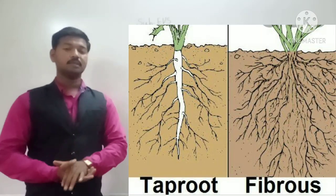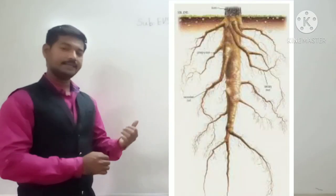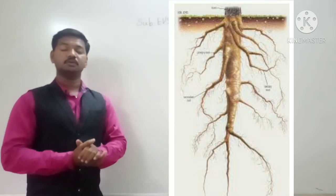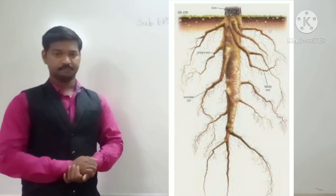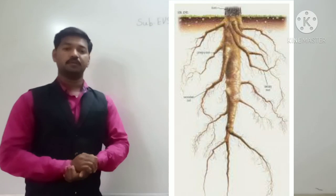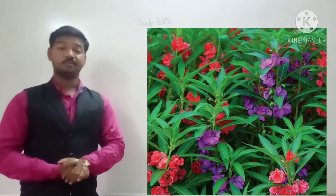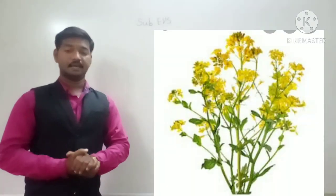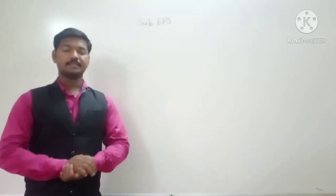These are taproot and fibrous root. Now first we will talk about taproot. A main thick root grows from the end of the stem, and so many side roots are growing from this main root. Plants like balsam, pea, mustard, and carrot — they have taproots.